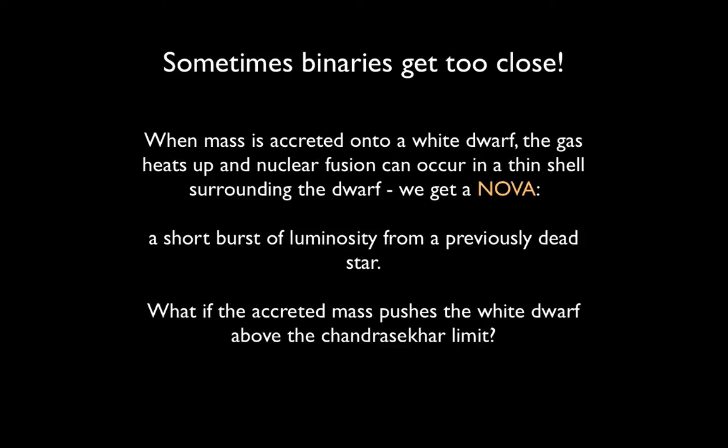When mass is accreted onto a white dwarf, the gas heats up and nuclear fusion can occur in a thin shell surrounding the dwarf. We get a nova. A nova is a short burst of luminosity from what we thought was a previously dead star. So again, we have a white dwarf. It's a remnant star. It hasn't done much in many, many years. And all of a sudden, this new material, this new influx of material is deposited onto the surface of the star. That material gets really hot really quickly, and it goes through this period of runaway nuclear fusion. That releases a lot of energy, and we get a nova. Once that stuff is burnt through, you just get a white dwarf again. So it's just one period of a burst of luminosity before we get back to the regular white dwarf remnant.